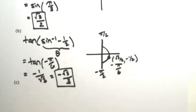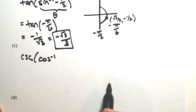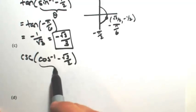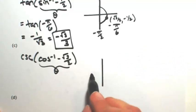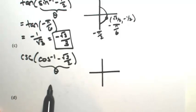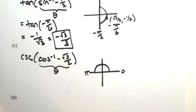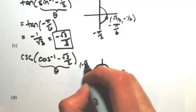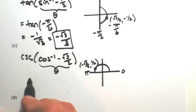Let's try the cosecant of the inverse cosine of negative square root of three over two. The inverse cosine is just an angle whose cosine is negative square root of three over two. Keeping in mind the restriction of inverse cosine — the domain restriction of cosine was between zero and pi — we can only look at the top half of the unit circle. The x-coordinate is negative square root of three over two, giving the point (-√3/2, 1/2), so this angle between zero and pi is five pi over six.